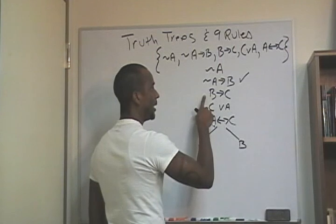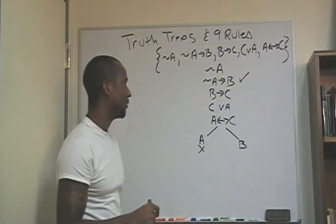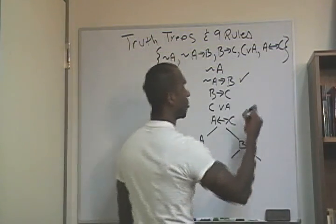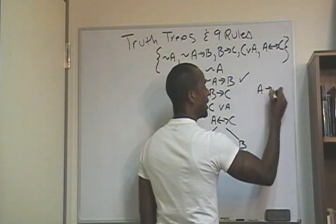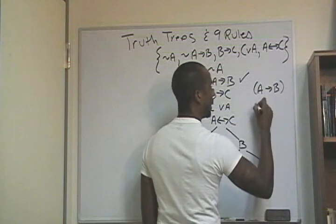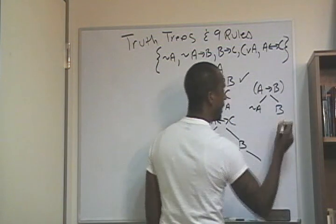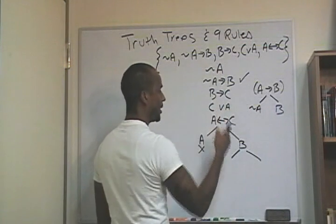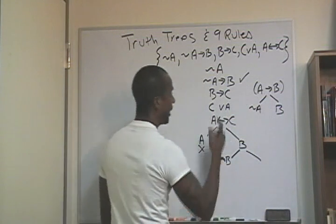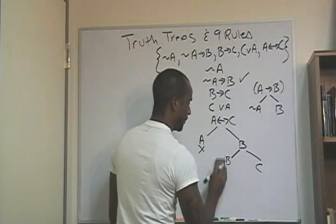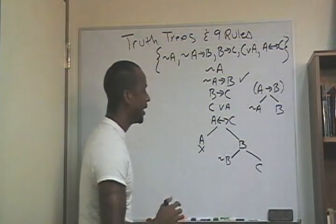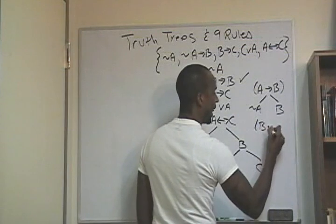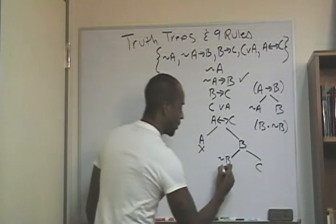Now I have the claim if B then C. Applying the same conditional rule — the rule says if A then B becomes: not A on one branch, B on the other. So if B then C becomes: not B on one branch, C on the other. But I already have B on the same branch of the tree. I can't have both B and not B — that's inconsistent. So this branch of the tree closes as well.